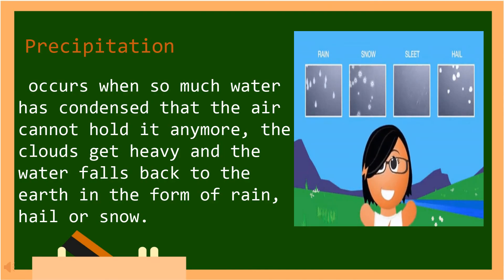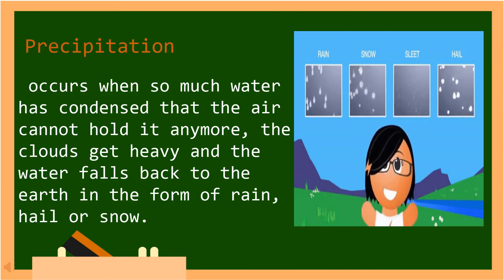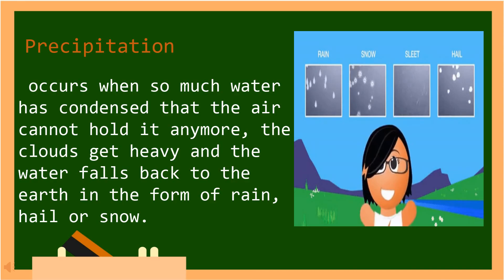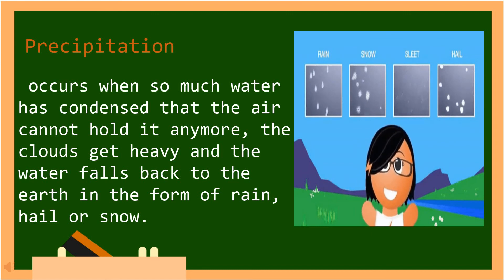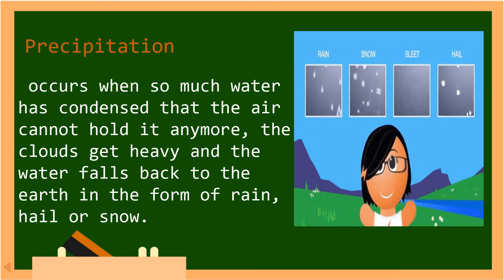In Tagalog, nangyayari ang pagulan kapag napakaraming tubig ang nagkondens na hindi na mahawakan ng hangin. Ang mga ulap ay bumibigat at ang tubig ay bumabagsak pabalik sa lupa sa anyo ng pagulan, ulan ng yelo o ng niebe.